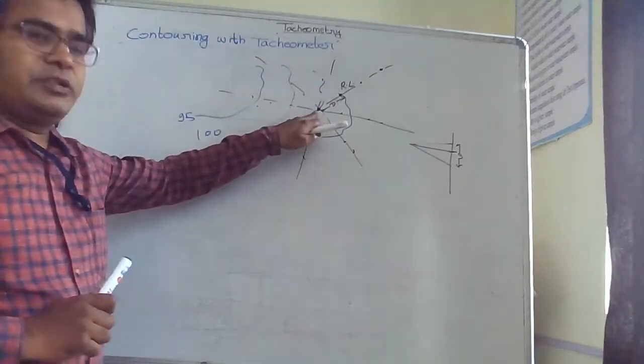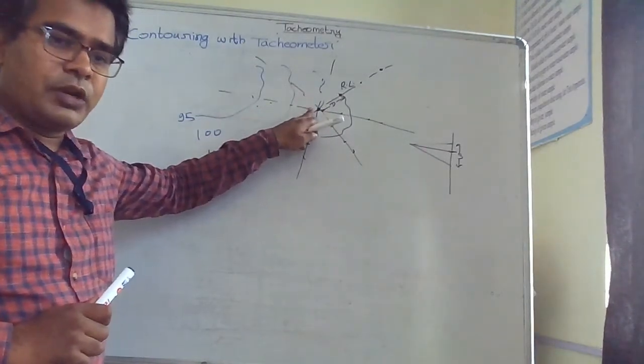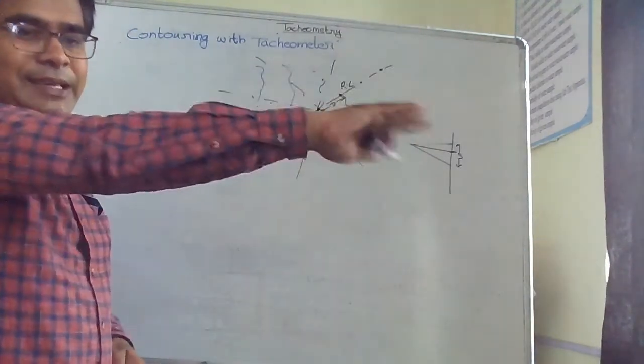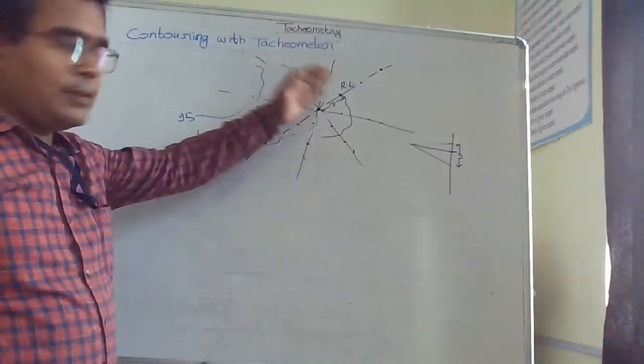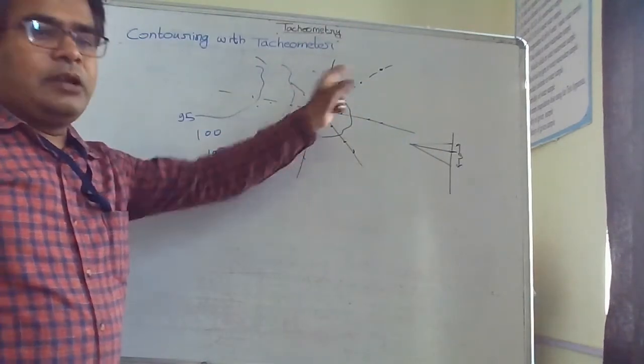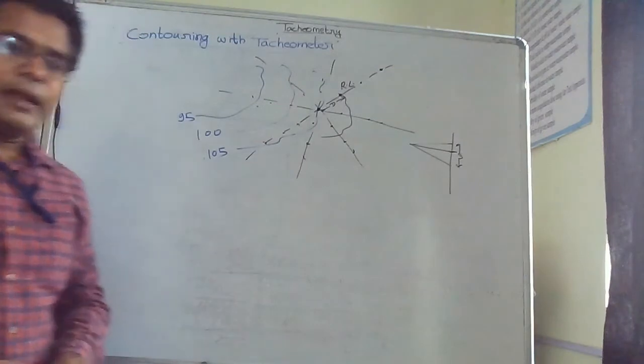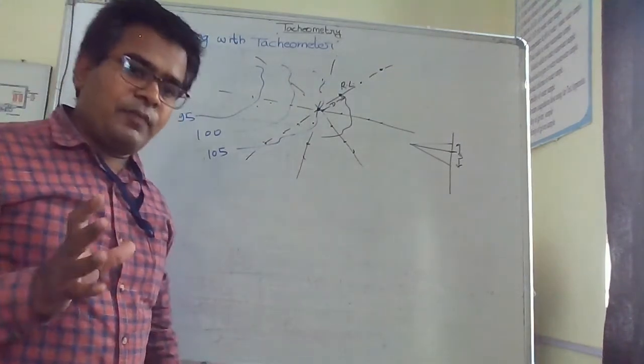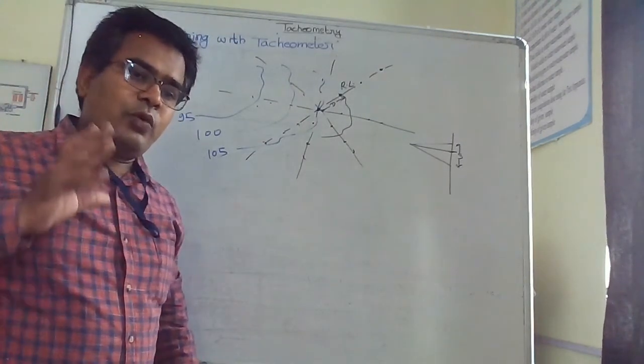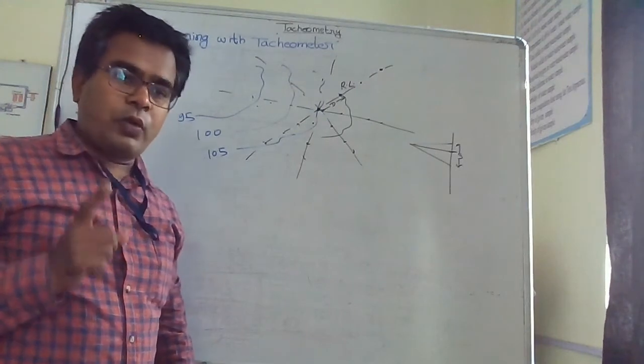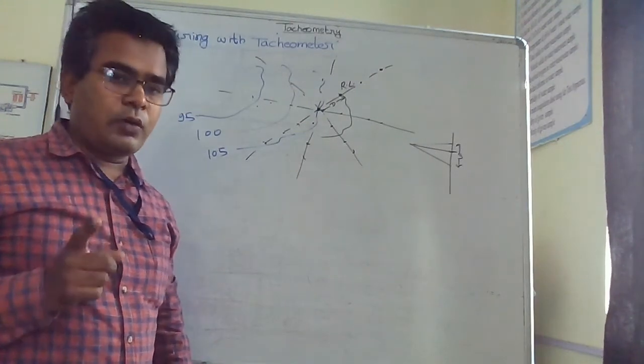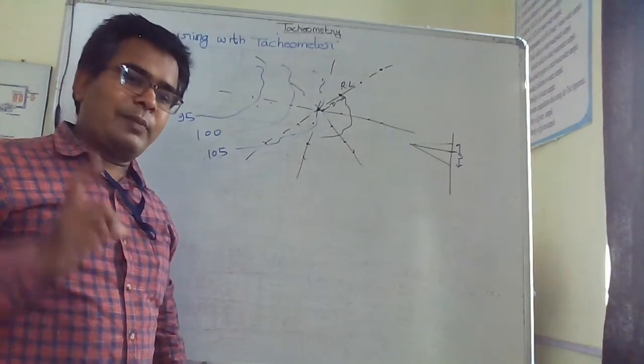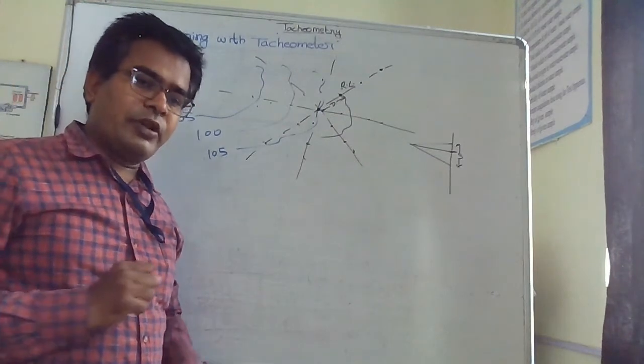To summarize: we first select one station where we set the tachometer. We consider some lines at equal angles, and on those lines we select some points. At each point we keep the staff and note down the upper cross hair reading, lower cross hair reading, and middle cross hair reading.